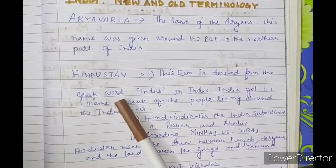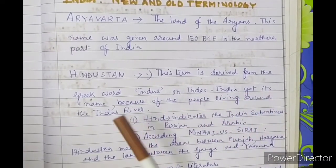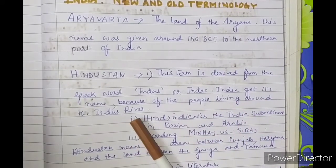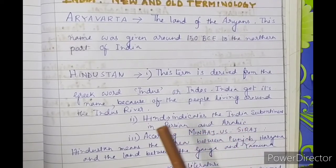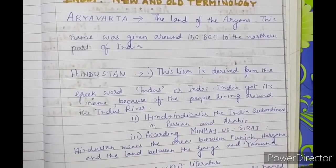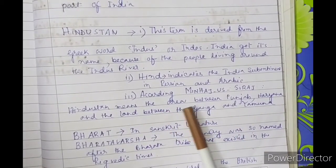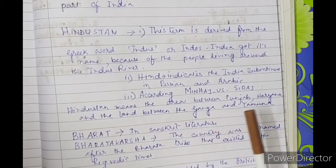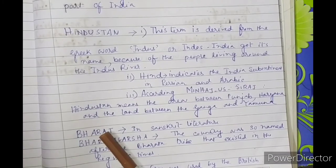Hindustan: this term is derived from the Greek word 'Indas' or 'Indos.' India got its name because of the people living around the Indus River. In Persian and Arabic, the meaning of 'Hind' indicates the Indian subcontinent. According to Minhaj-us-Siraj, Hindustan means the area between Punjab and Haryana and the land between the Ganga and Yamuna rivers.